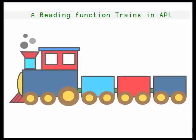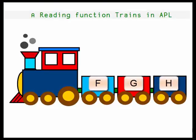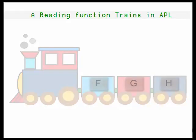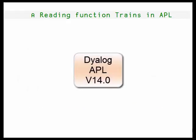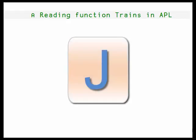This is a video on function trains. Trains are fairly new to APL. They appeared with Dialog APL version 14 in 2014. They're pretty useful, but they're not new. They've been in use in the J language for years.